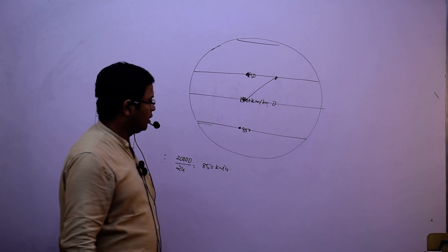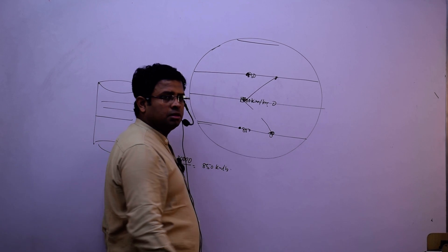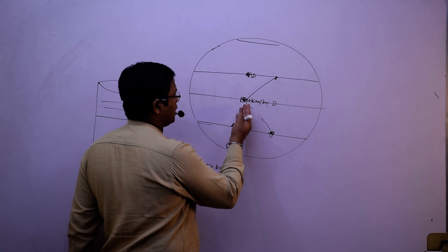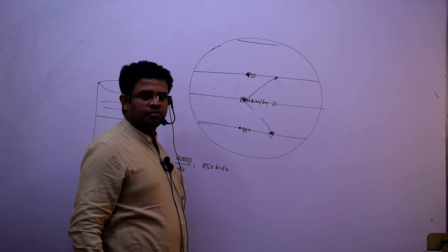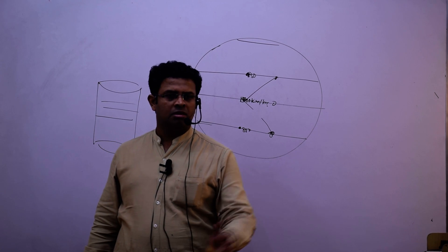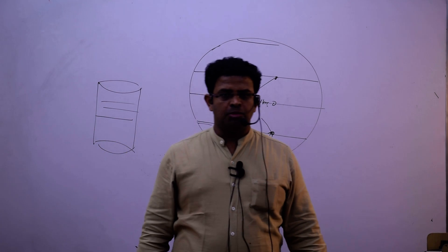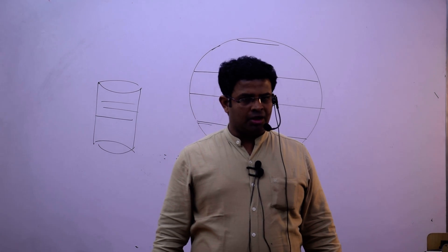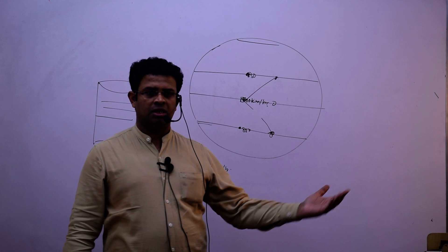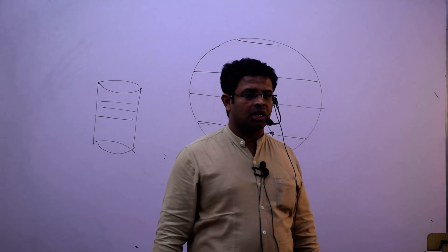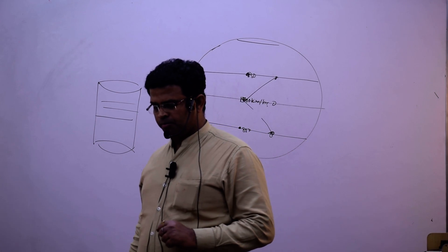And if I throw from here, it will go ahead. So in the northern hemisphere, if I'm throwing from here to here, it is showing rightward deflection. And in the southern hemisphere, it is showing leftward deflection. In the northern hemisphere, rightward deflection; in the southern hemisphere, leftward deflection. It is completely okay.